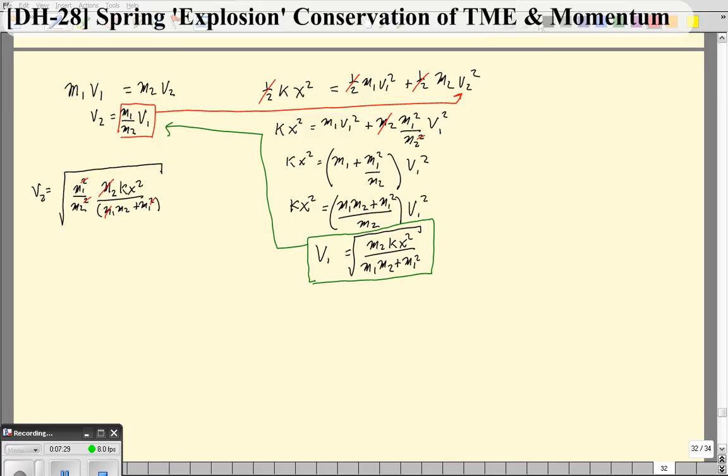And what you wind up with is that V2 equals, so on the top, M1 Kx squared. On the bottom, I take this M2 times both terms, so I multiply it in, M2 squared plus M1 M2, take the square root, and that gives us the equation for velocity 2.